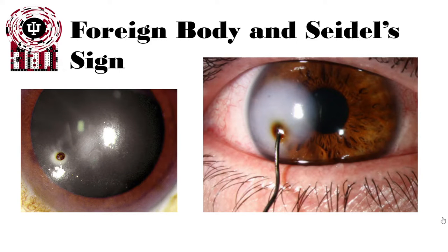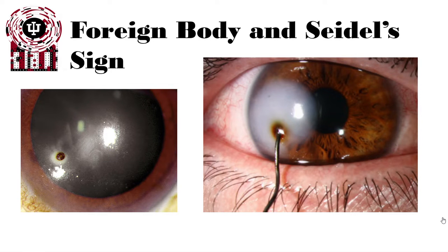Trauma leads directly into the topic of foreign bodies and another use of fluorescein. Here we have two examples: a relatively superficial lesion on the left, and on the right a larger, more serious corneal puncture that has likely penetrated all the way through into the anterior chamber. We can't clearly see it because of significant edema, the stromal fibrils being out of alignment, and a haze in the cornea that may result in a scar.